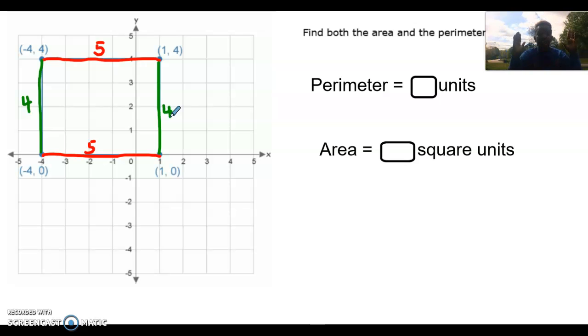Two identical pairs. So how do we calculate the perimeter? Well, we have five plus five gives us ten. And then we have four plus four gives us eight. So ten plus eight is 18 units. If you need to rewind that and watch it, go ahead and do so.